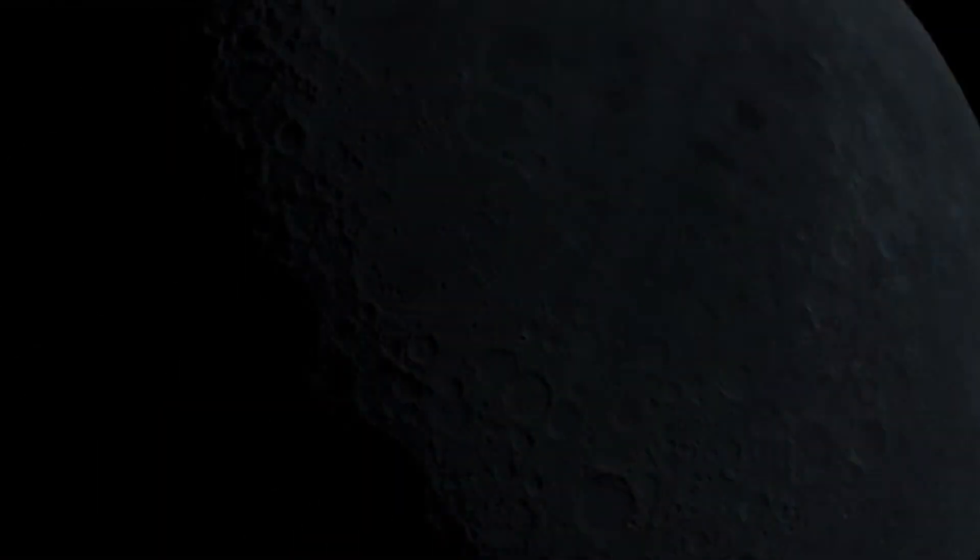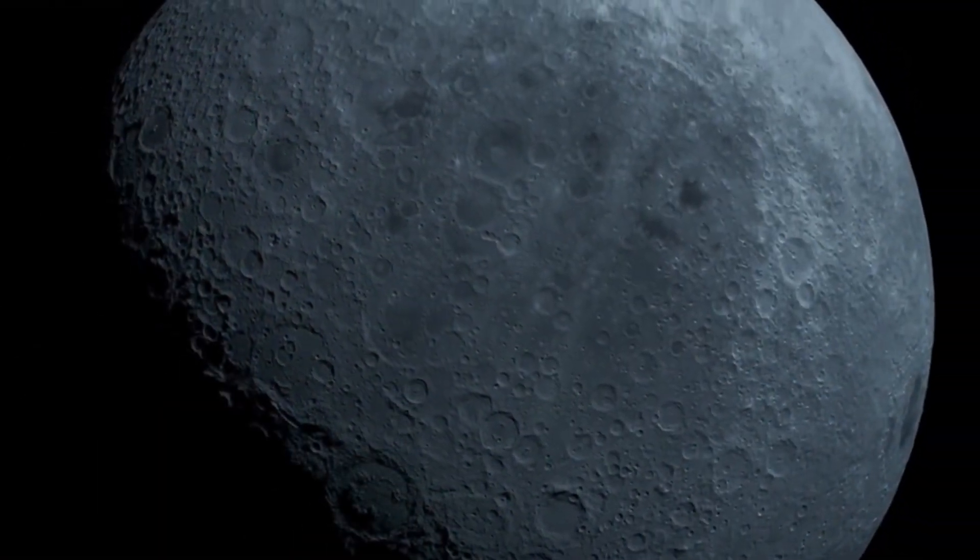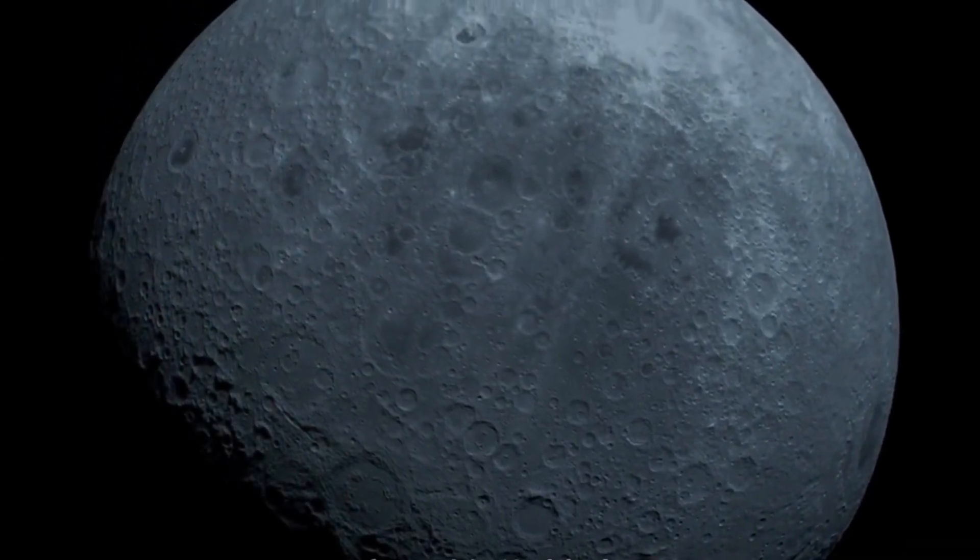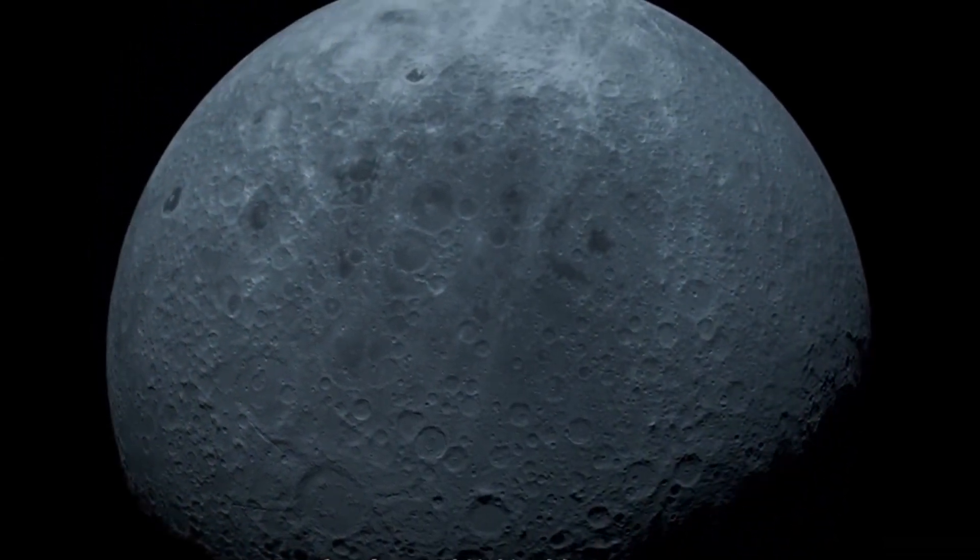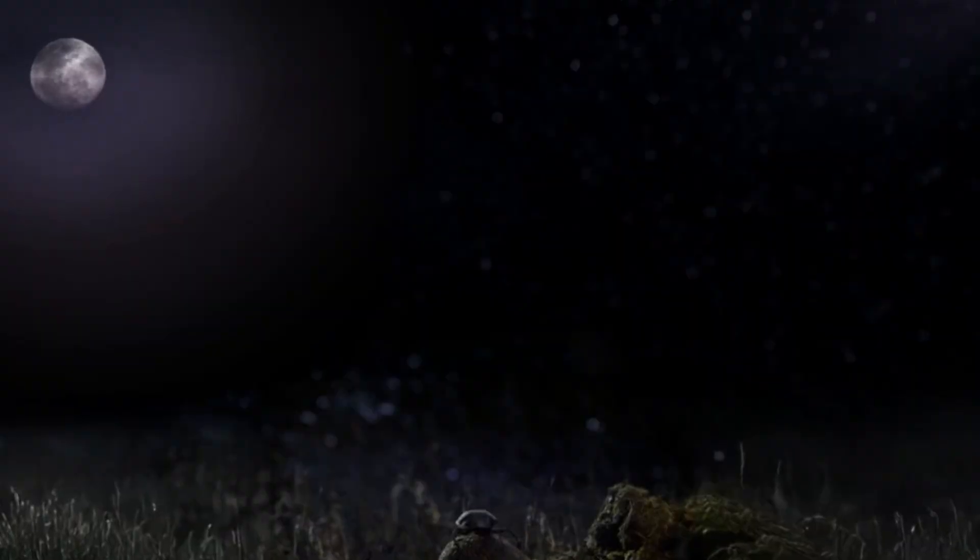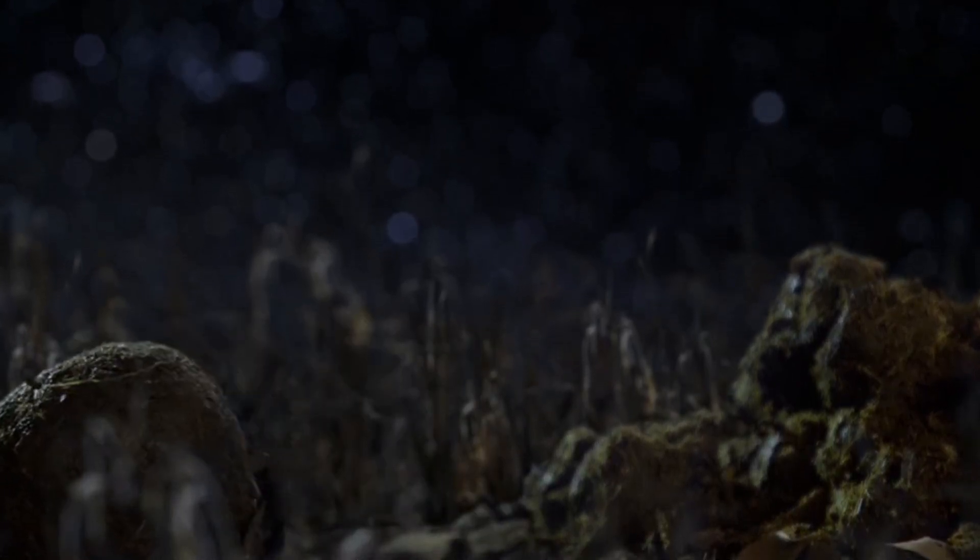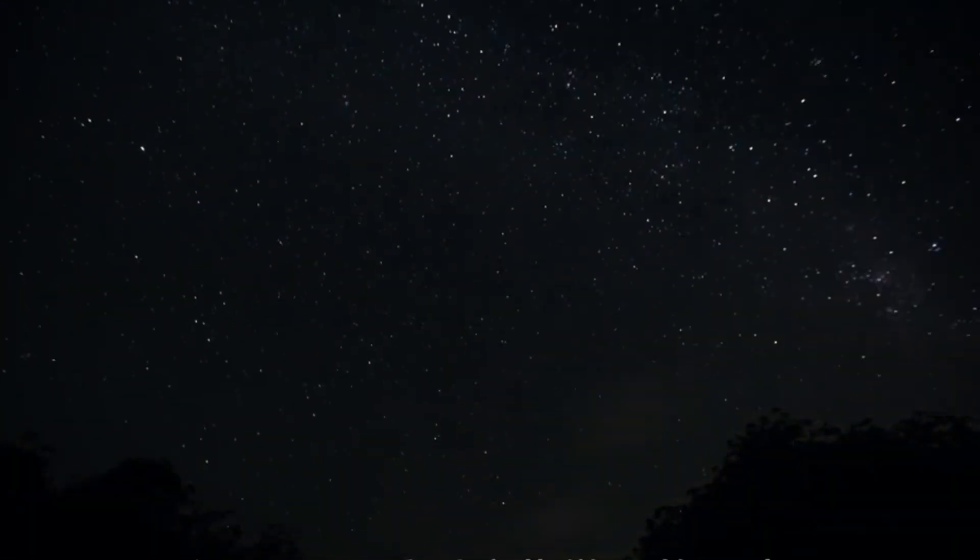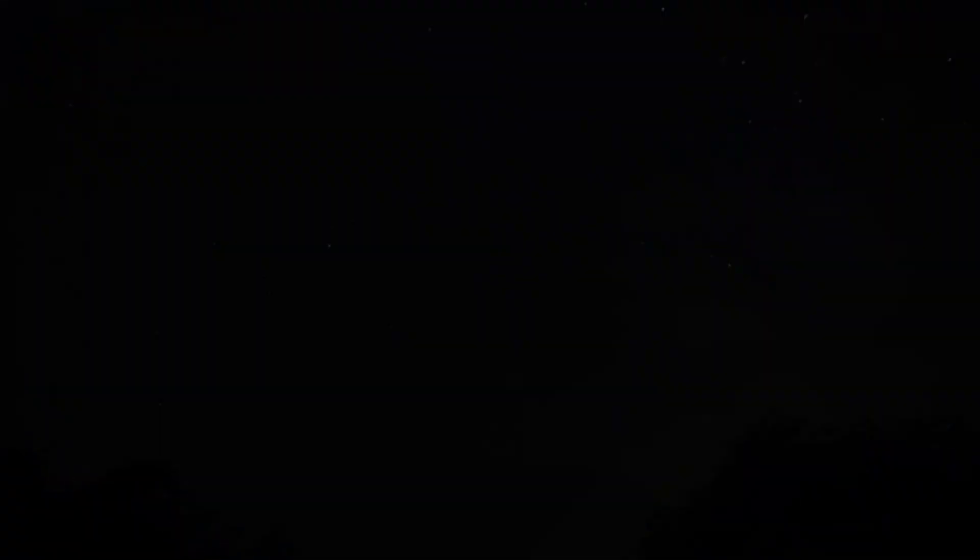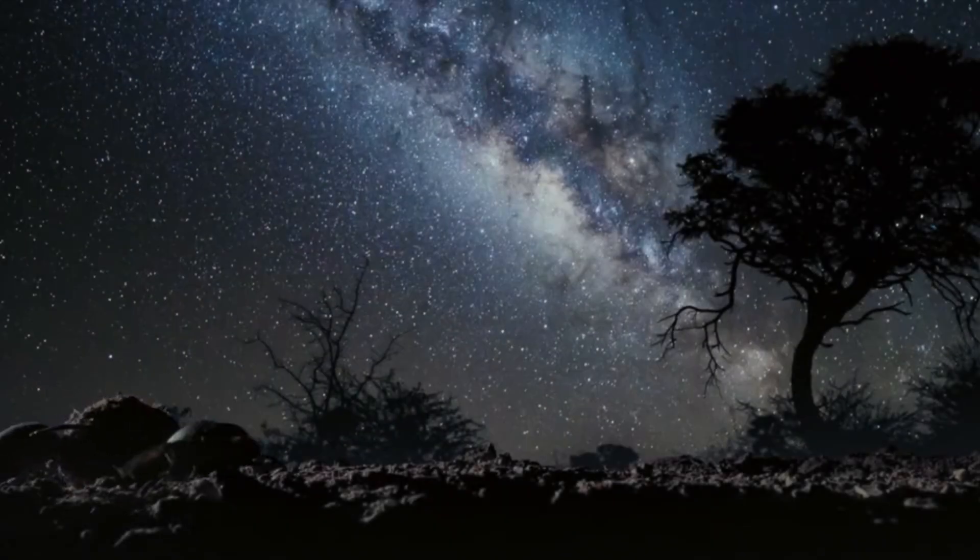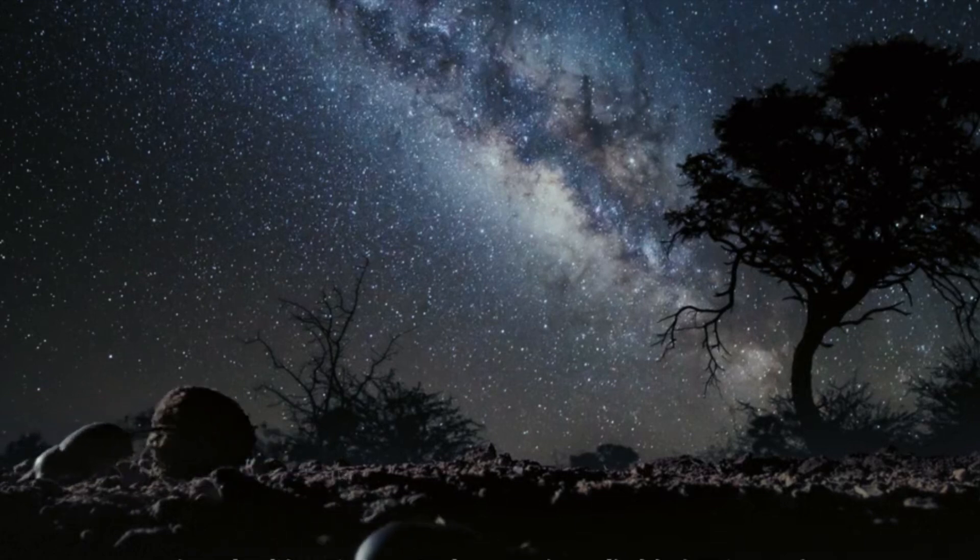At night, nocturnal dung beetles switch to a different navigation system: the moon. Like a natural GPS, the moonlight guides their journey. But what about cloudy nights when the moon is hidden? Unfortunately, the dung beetle's vision is not sensitive enough to detect the faint starlight above.